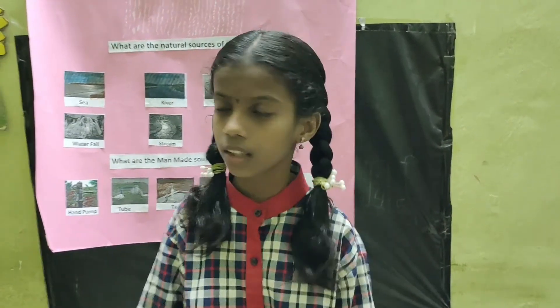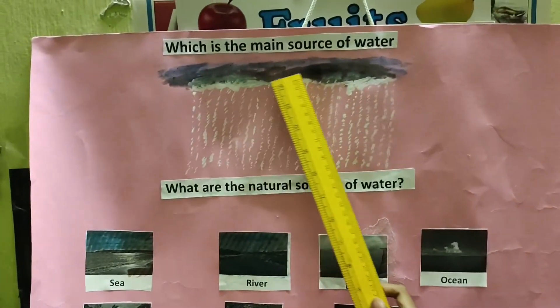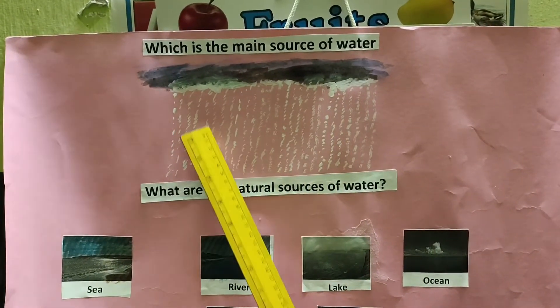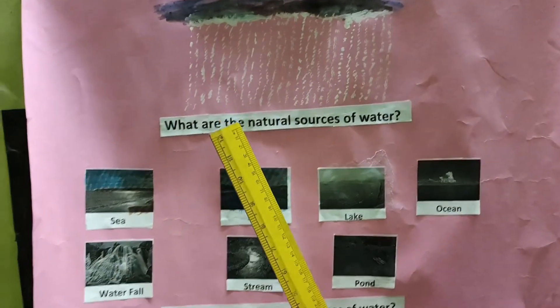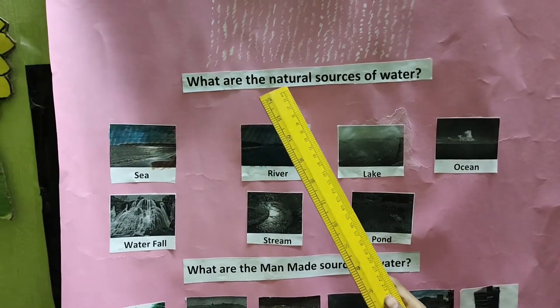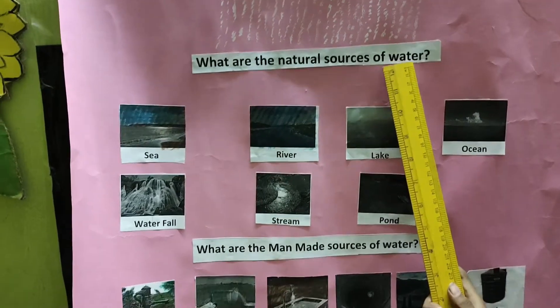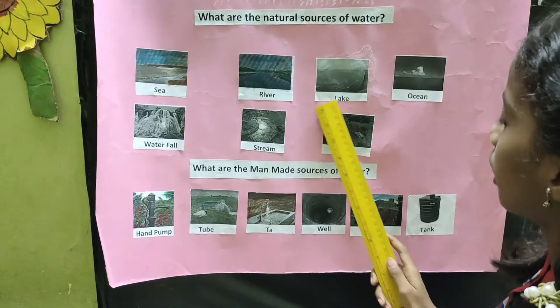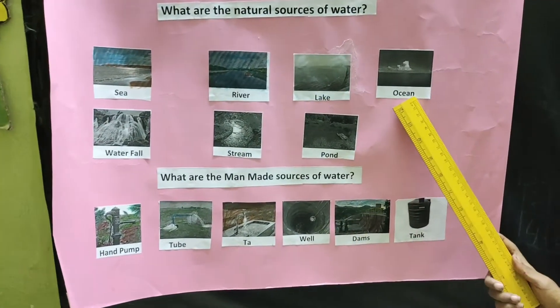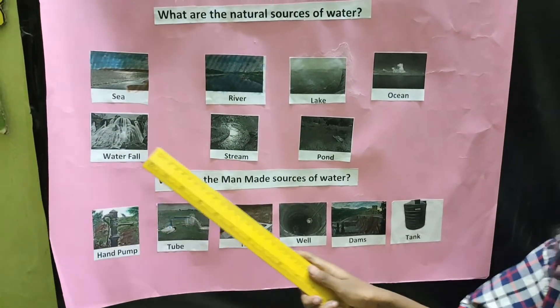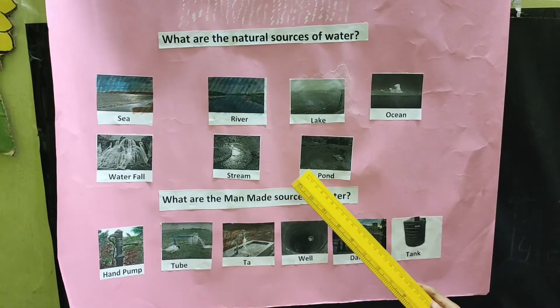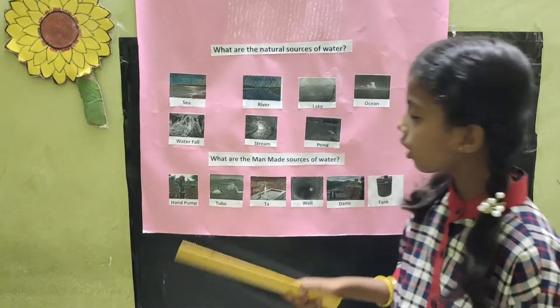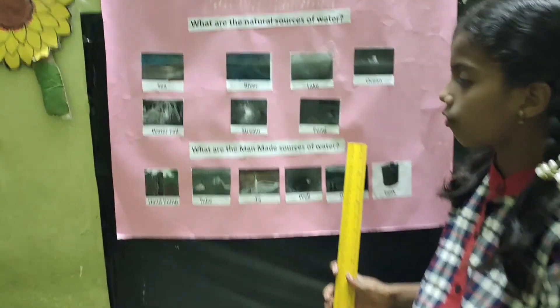Activity number 2: Which is the main source of water and which is the manmade source of water? Rain is the main source of water. The natural sources of water are: Sea, River, Lake, Ocean, Waterfalls, Stream, and Pond.